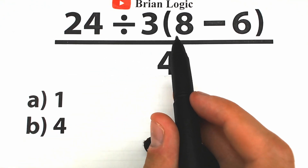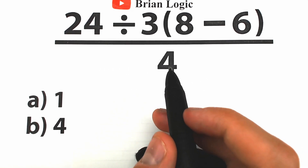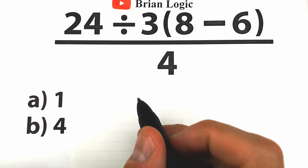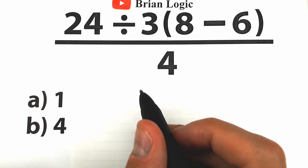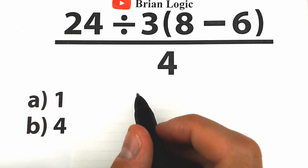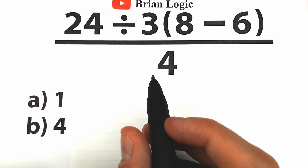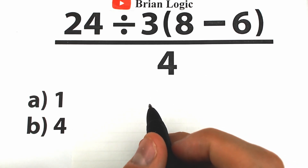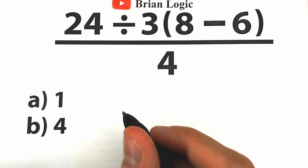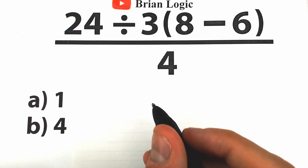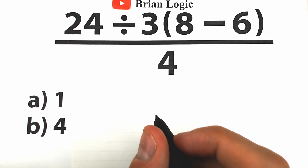The problem is: 24 divided by 3, times (8 minus 6), all divided by 4. You can pause the video and try to solve it yourself, or write your solution in the comments. I think you'll be a little shocked by the correct answer, because there are two approaches and people all over the world are arguing about which is correct — option A or option B — and it turns into a big argument.